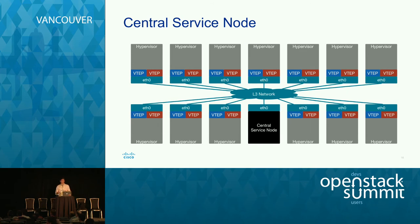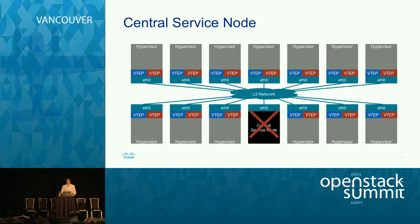The simplest implementation of a service node is just a single central node. With a large number of hypervisors all connected to an L3 network, all their VTEPs point to this single service node — or a cluster for HA. The problem is that if that service node goes down, you can't do any more learning and it's not possible to send broadcast, unknown, or multicast packets anymore. Your network is effectively down.